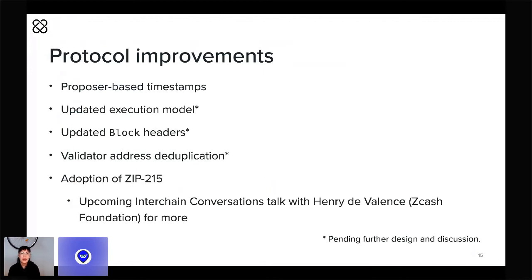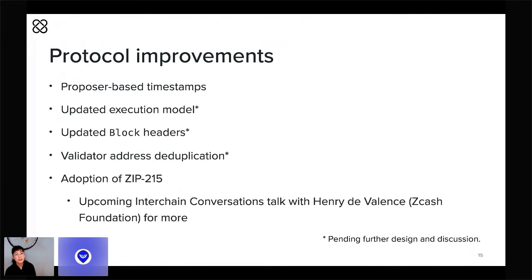We're considering, for example, adding an additional block processing phase that would give applications more control over how blocks are handled over the course of a round of consensus. We're also considering removing redundant fields from our CommitSig and Vote objects. Lastly, we have decided to adopt ZIP 215, a proposal from the Zcash ecosystem that standardizes the validation rules across the many languages and implementations of the Ed25519 crypto libraries.